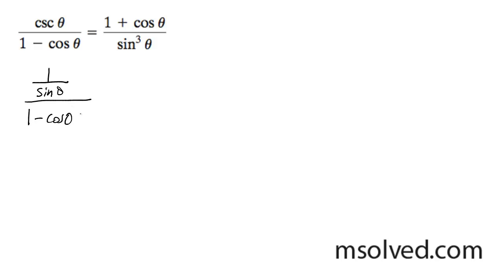So I get 1 minus cosine theta. And what I'm going to do is I'm going to take the conjugate of the denominator. So I get 1 plus cosine theta, and I'm going to go ahead and multiply this out.